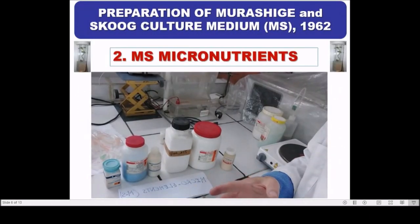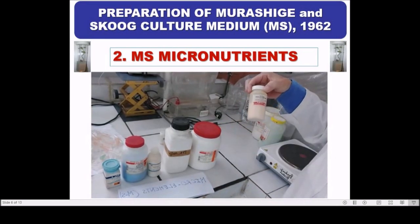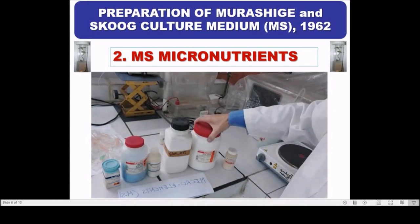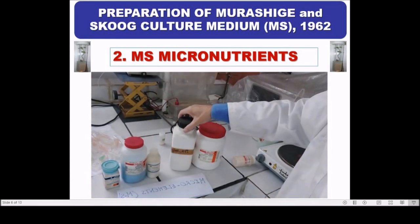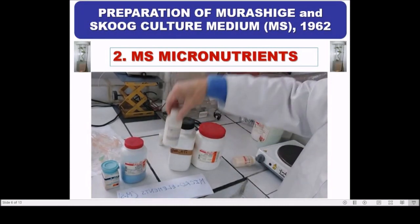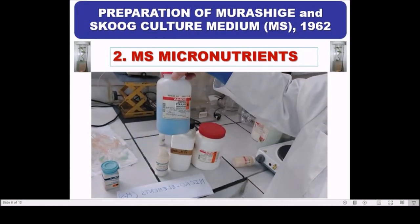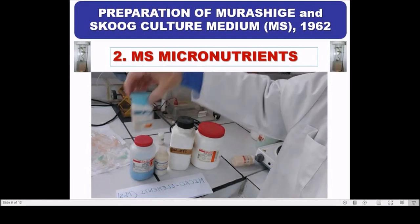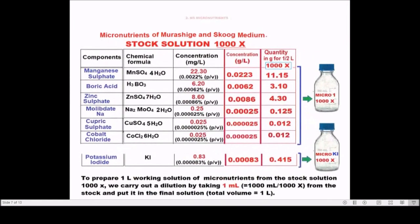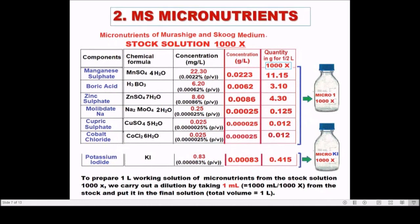The micro elements of Murashige and Skoog are manganese chloride, boric acid, zinc sulfate, sodium molybdate, cupric sulfate, and cobaltous chloride. Manganese is known to be required for the activity of several enzymes including dehydrogenases, carboxylases, kinases, oxidases, and superoxide dismutase enzymes.